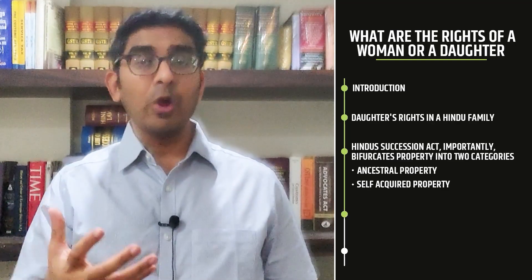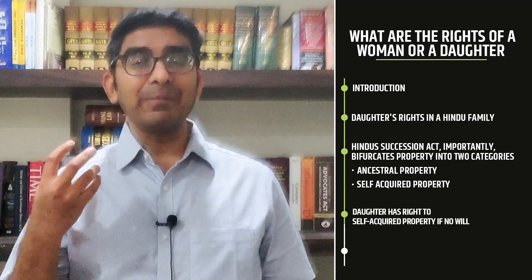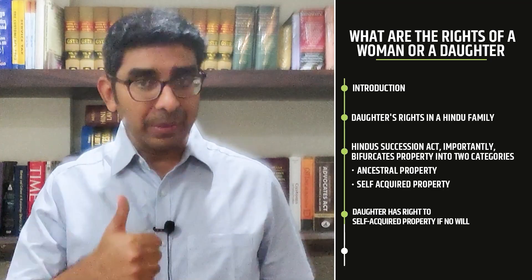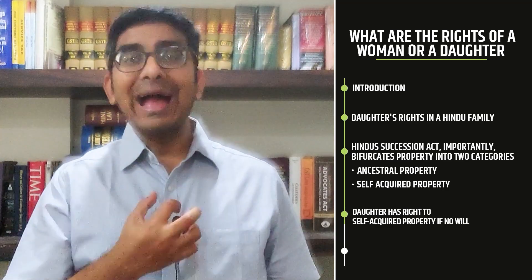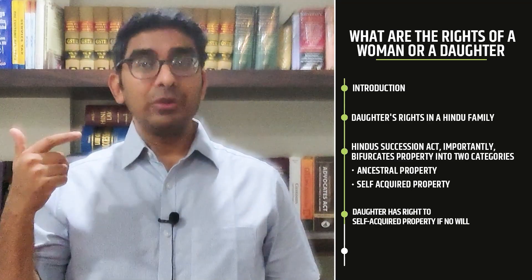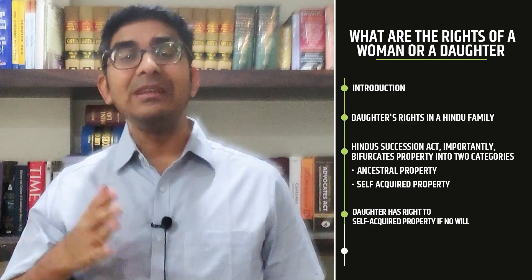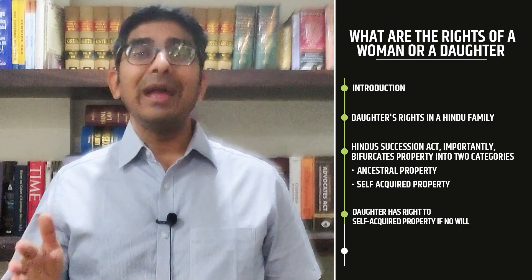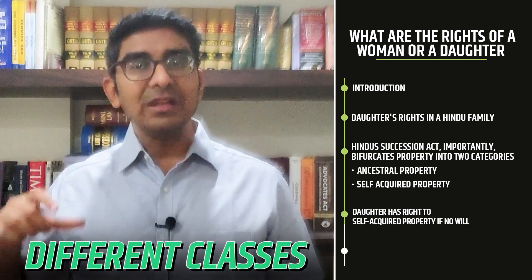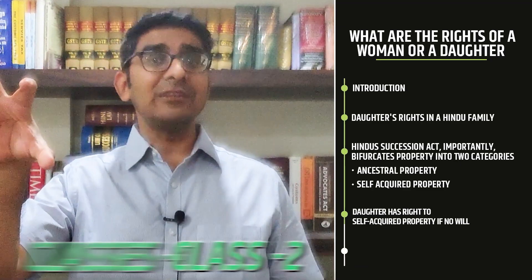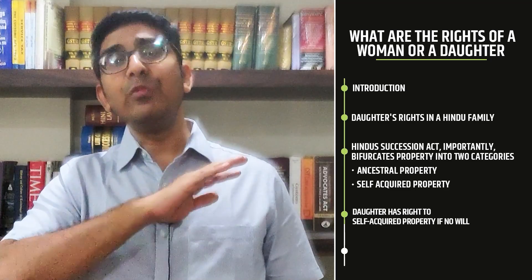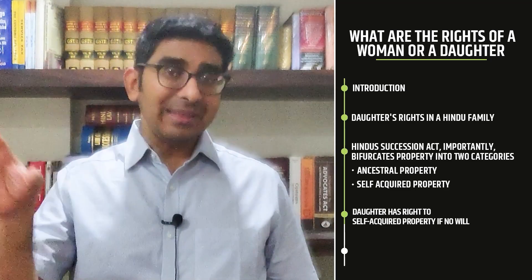Therefore, these women were not considered coparceners. Coparceners are people who have two features: one, they are members of the joint family property, which women were; but two, they also had the ability to inherit ancestral property — which women did not have from 1956 onwards. The Hindu Succession Act also provides for different classes of heirs — Class 1 heirs, Class 2 heirs, and so on. If there is anybody in Class 1, Class 2 heirs will not take. Women were not considered Class 1 heirs. So in a family with father, mother, son and daughter, if the father passed away, since the wife and the son are Class 1 heirs, the daughter would not take anything at all. This was the law from 1956 onwards.